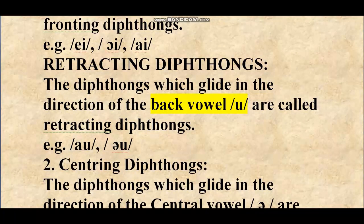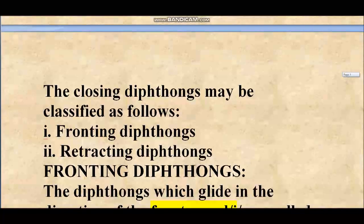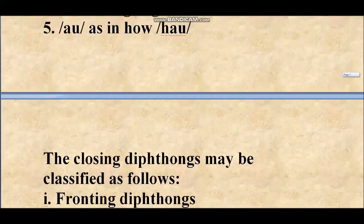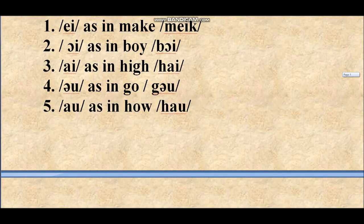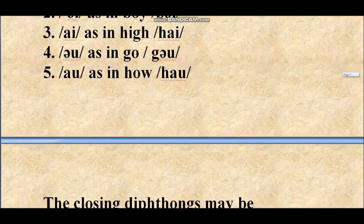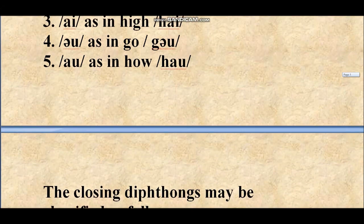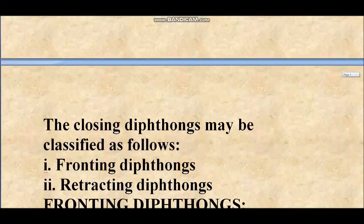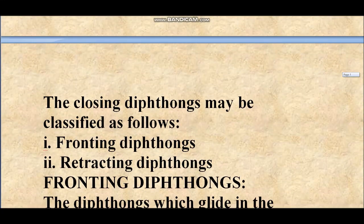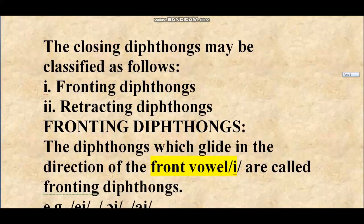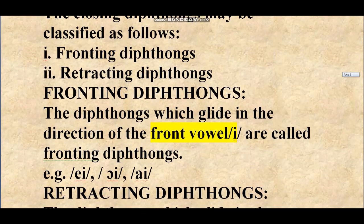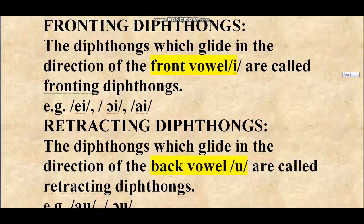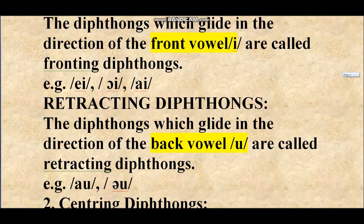So we have learned about closing diphthongs. The five closing diphthongs are /eɪ/, /ɔɪ/, /aɪ/, /əʊ/, and /aʊ/. These are further classified into fronting diphthongs — /eɪ/, /ɔɪ/, /aɪ/ — and retracting diphthongs — /əʊ/ and /aʊ/.